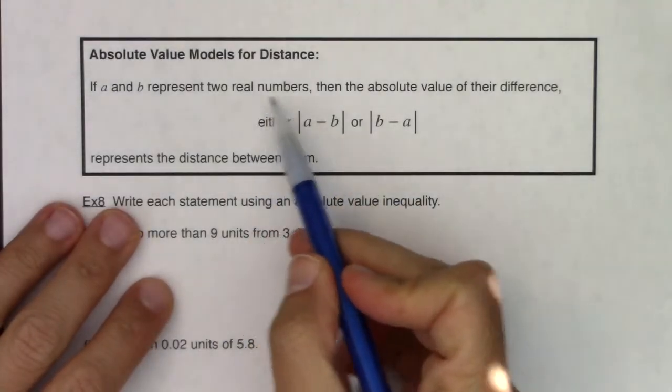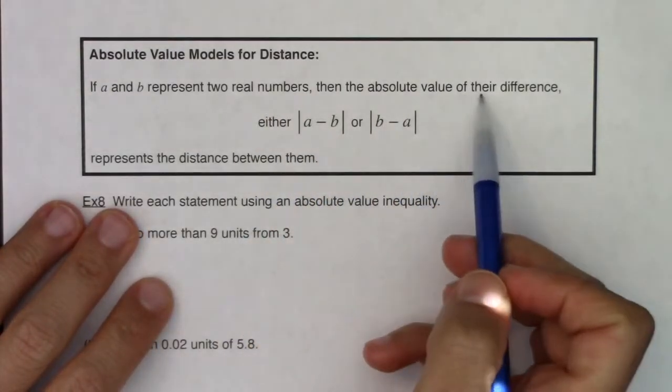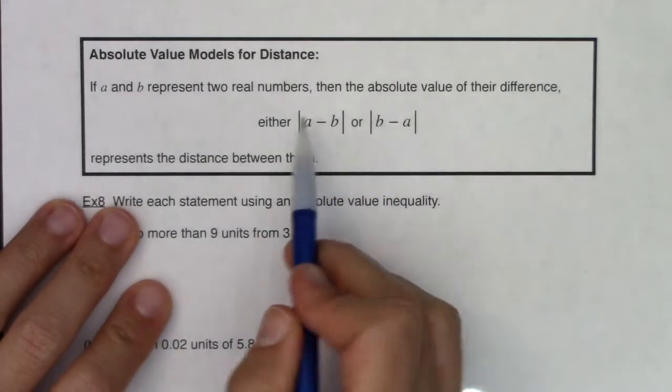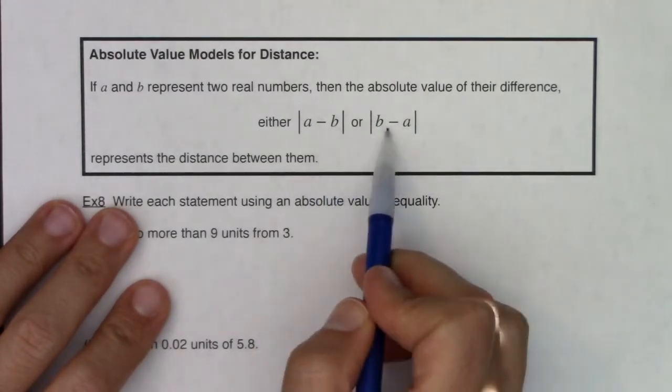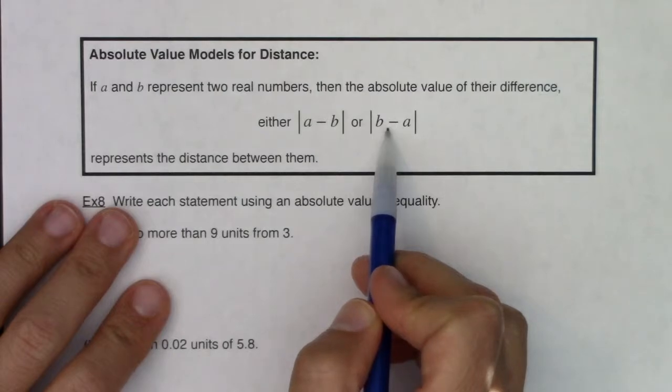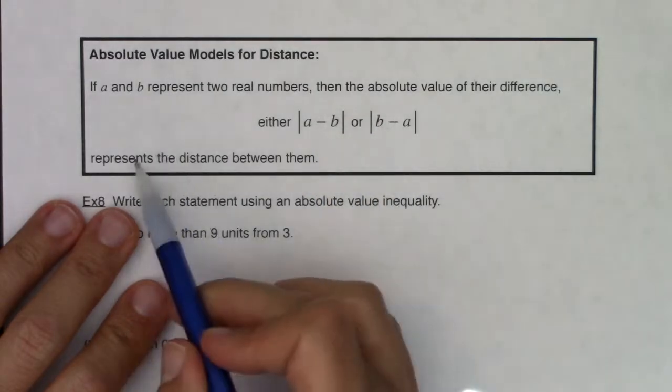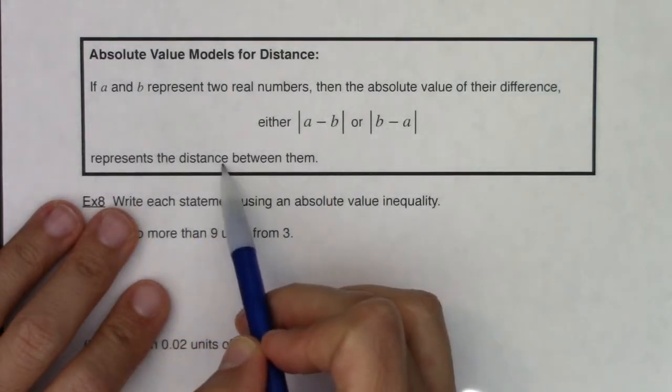If A and B represent two real numbers, then the absolute value of their difference, and you can write the difference in either direction, A minus B or B minus A, but either way they have an absolute value grouping symbol around them, that represents the distance between them.